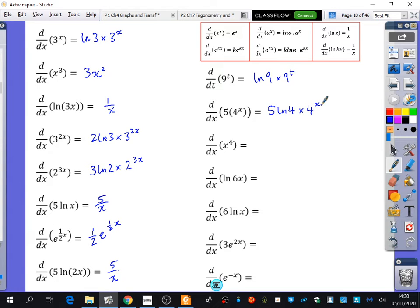So we've got x to the power of 4, Taylor. Yeah, don't forget the basics. Don't start doing random things with these. Locke, ln of 6x? 1 over x. And what about 6lnx? Good, 6 over x.